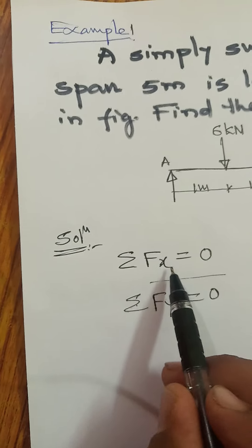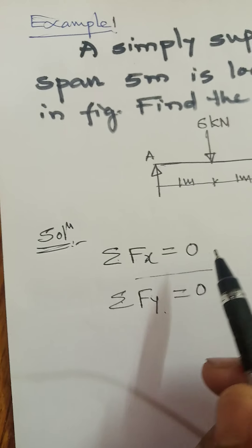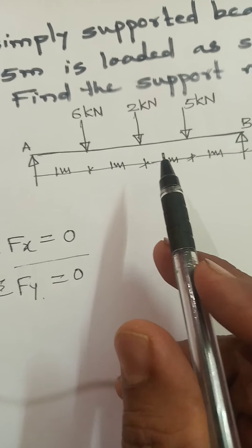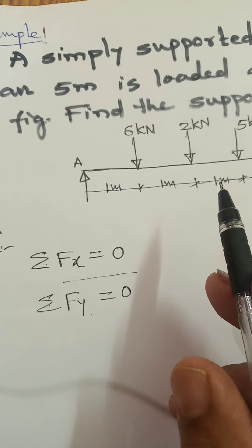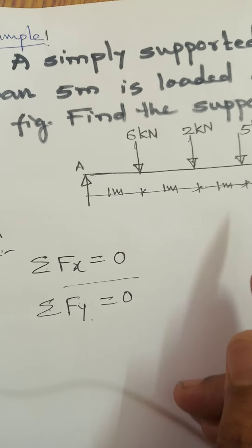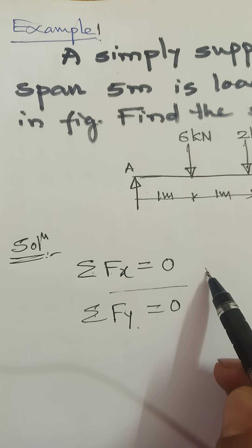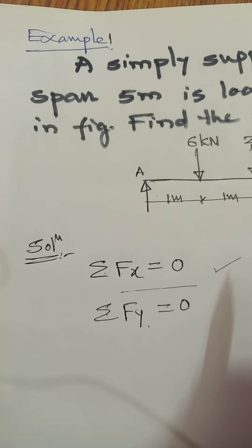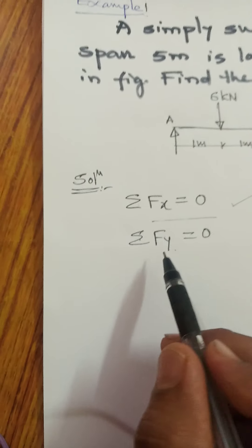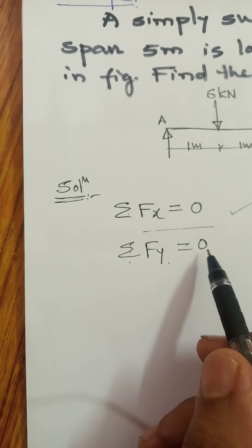Since there are no horizontal forces for the given beam, we have not applied the equation summation Fx equals zero. We could not apply this equation. So next, we go for summation Fy equals zero.